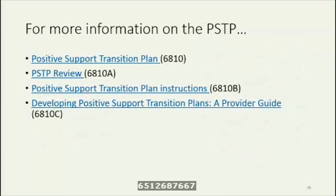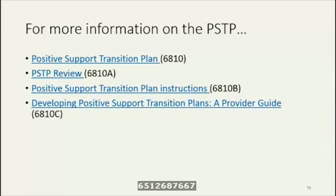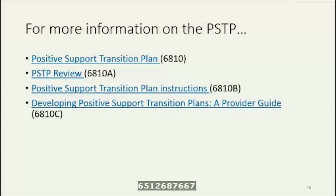Here are the different documents related to the positive support transition plan. The positive support transition plan itself is EDOC form 6810. At least every 90 days, a review of the positive support transition plan and the procedures within must be completed on the positive support transition plan review form, noted as 6810A. The manner in which the commissioner wants positive support transition plans to be created are found in the positive support transition plan instructions, EDOC form 6810B. A manual titled 'Developing Positive Support Transition Plans: A Provider Guide,' created in partnership with the University of Minnesota, can be found in the EDOC section as 6810C, and is meant to be a guide for any provider creating a positive support transition plan.